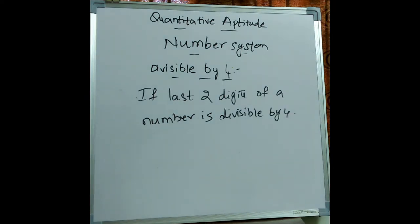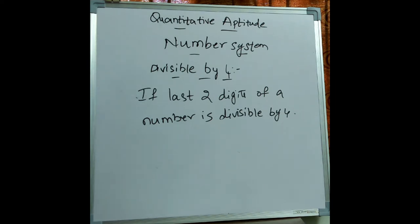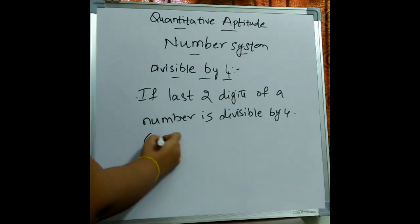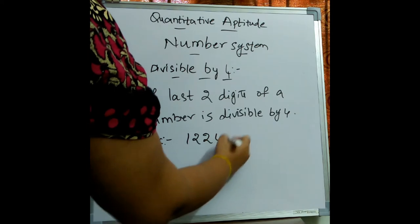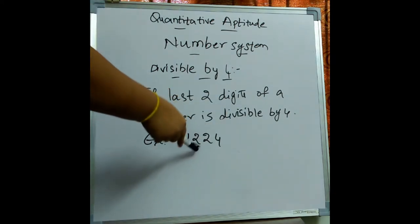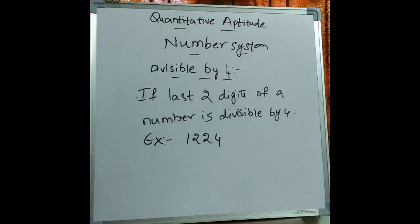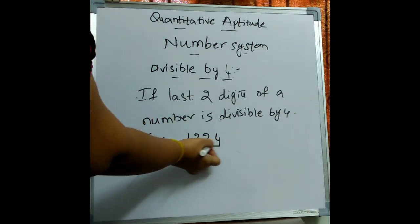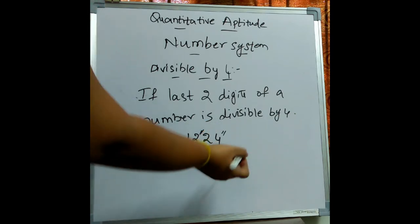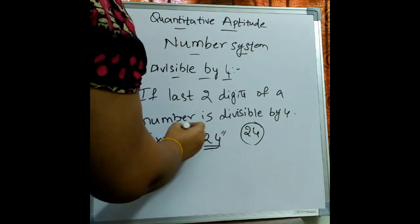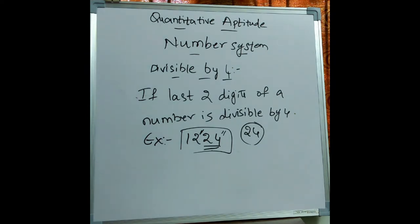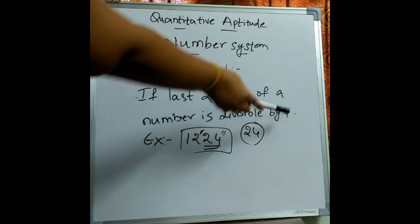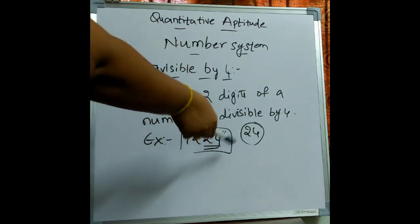Now let's see what is the rule to find out whether a number is divisible by 4. If the last two digits of a number are divisible by 4, then the complete number will also be divisible by 4. For example, take 1224. The last two digits are 24. Since 24 is directly divisible by 4, we can conclude that 1224 is also divisible by 4.